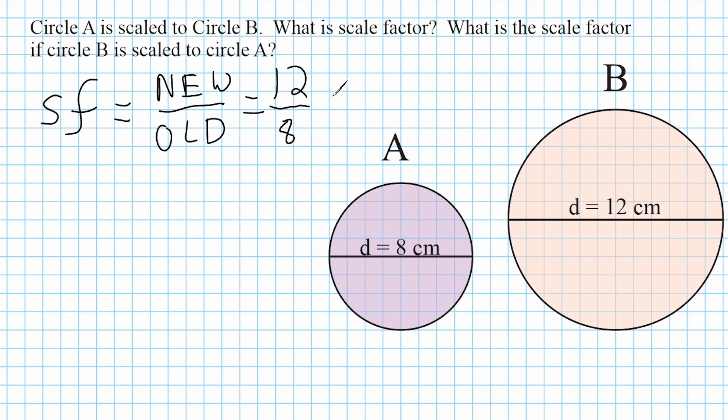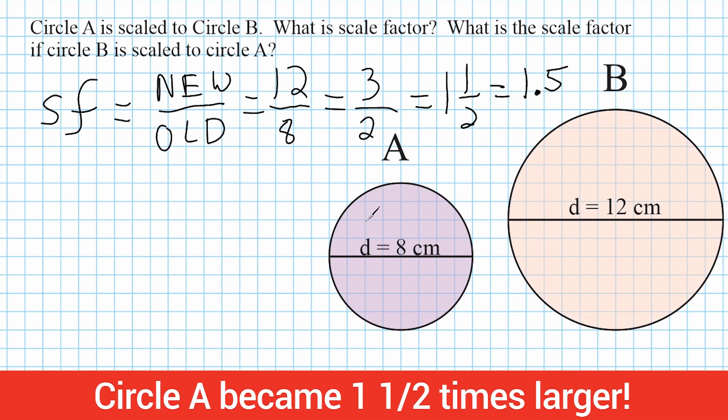Now this is an improper fraction, and we can reduce this to be 3 over 2. Now if we express this as a mixed number, that would be 1 and 1/2. And as a decimal, this would be 1.5. So we could say that circle A was enlarged by a factor of 1.5.